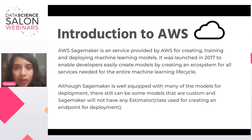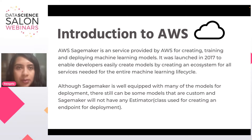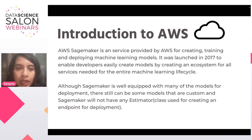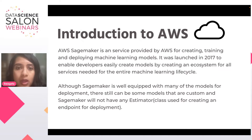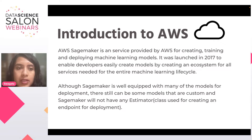Let's get started with a brief introduction of all the terminologies we're going to use today. First is AWS. AWS is a cloud provider, similar to Azure and GCP. It's one of the most widely used cloud platforms, and within AWS there are hundreds of services being provided. One of those services is called SageMaker. SageMaker is the service used for any and every machine learning operation you might want to perform — for example, training your model, preparing your data, deploying your model, tuning your model, and evaluating it.